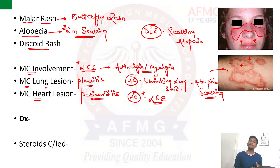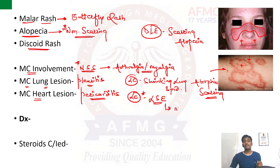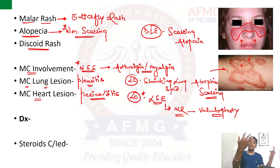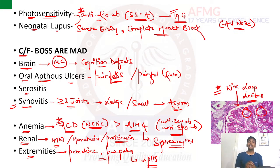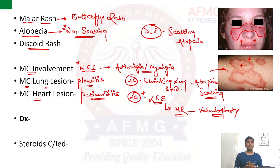In Libman-Sacks endocarditis with symptomatic valvular regurgitation like mitral regurgitation, the treatment of choice is valvuloplasty, not steroids. Steroids can be used for autoimmune hemolytic anemia, oral aphthous ulcers, serositis, and synovitis, but in symptomatic valvular regurgitation from Libman-Sacks endocarditis, valvuloplasty is required.